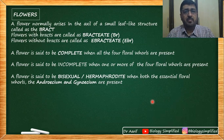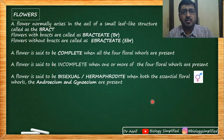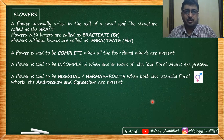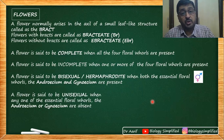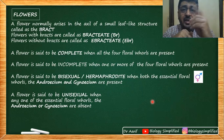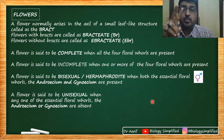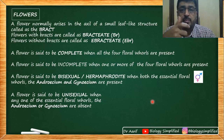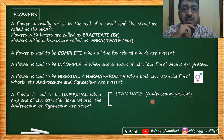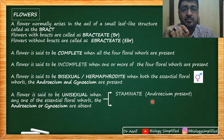Bisexual is also called hermaphrodite — the symbol for bisexual is an international convention. A flower can also be unisexual — having either androecium or gynoecium, but not both. A flower with only androecium is called a staminate flower, shown by the male symbol. A flower with only gynoecium is called a pistillate flower.